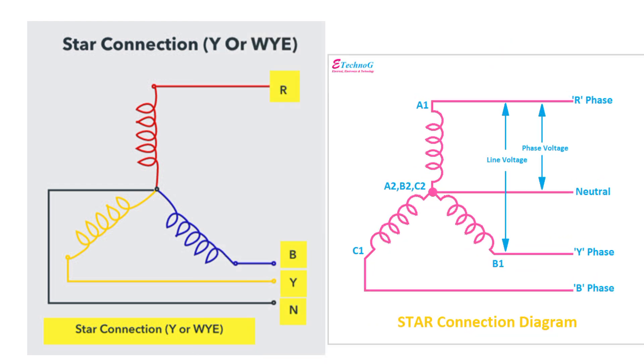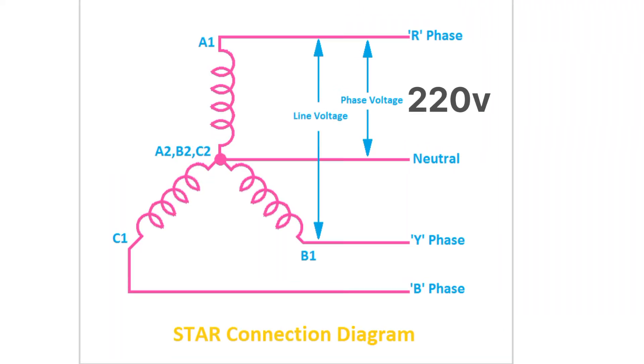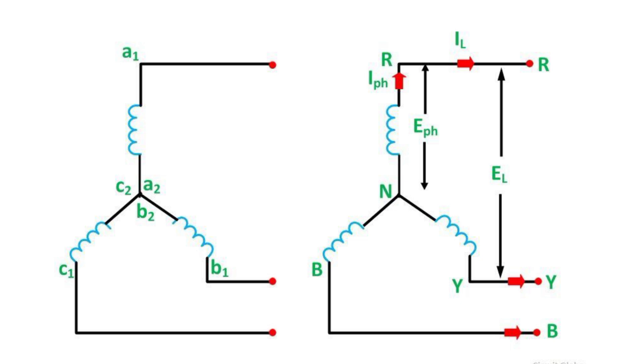If we measure the value of voltage between any one terminal of the transformer and neutral, that will give approximately 220 volt. That is also known as the phase voltage of the transformer.